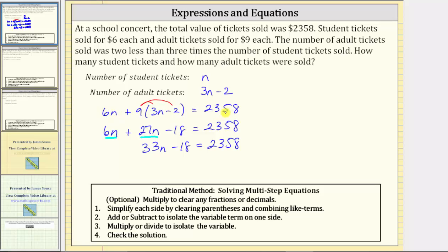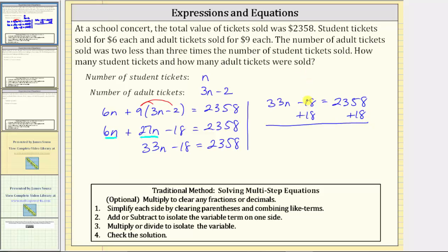Giving us 33n minus 18 equals 2358. This equation is equivalent, but now the left side is simplified. The next step is to add or subtract to isolate the variable term. To isolate 33n, we need to undo the minus 18 by performing the opposite operation. The next step is to add 18 to both sides of the equation. Simplifying, negative 18 plus 18 is zero, so we now have 33n equals 2358 plus 18, which equals 2376.